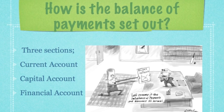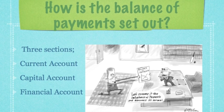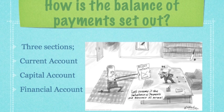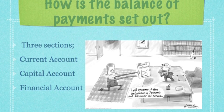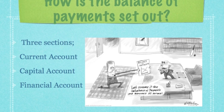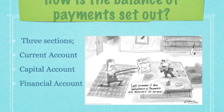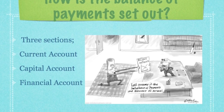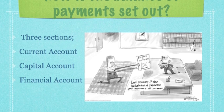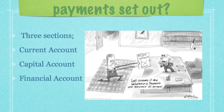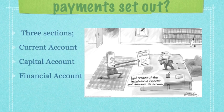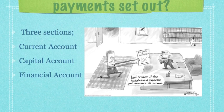How is the balance of payments set out? It is divided into three sections: the current account, the capital account, and the financial account. Each section can be in a deficit or a surplus. But the overall balance of payments — all three sections together — must balance; it cannot be in a deficit or a surplus. The whole point of being a balance of payments is that it balances out.